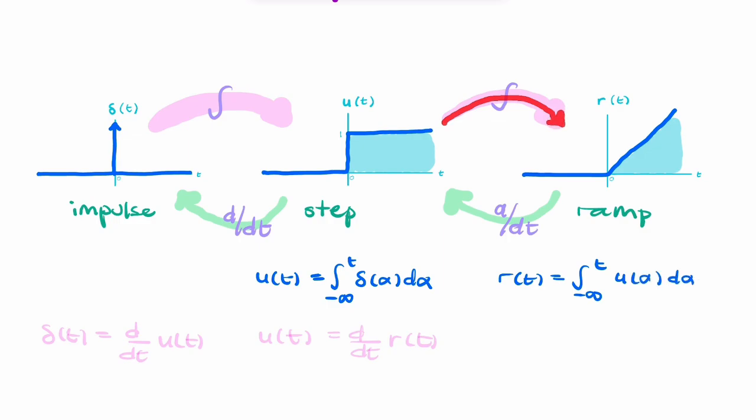And we can also go backwards and write each as a derivative. So I could write the impulse, the unit impulse delta,